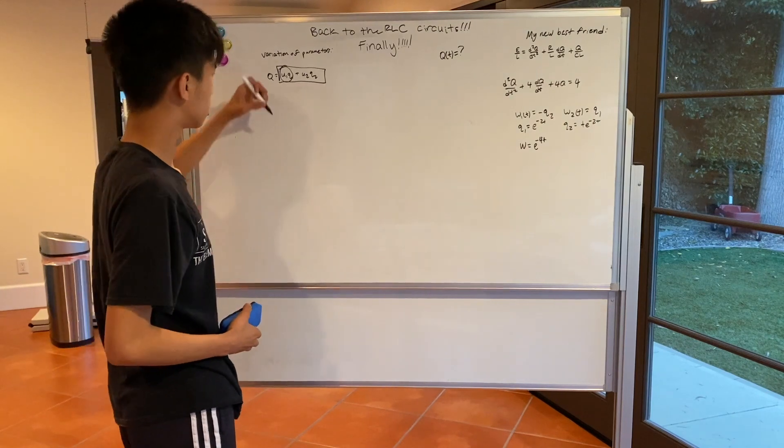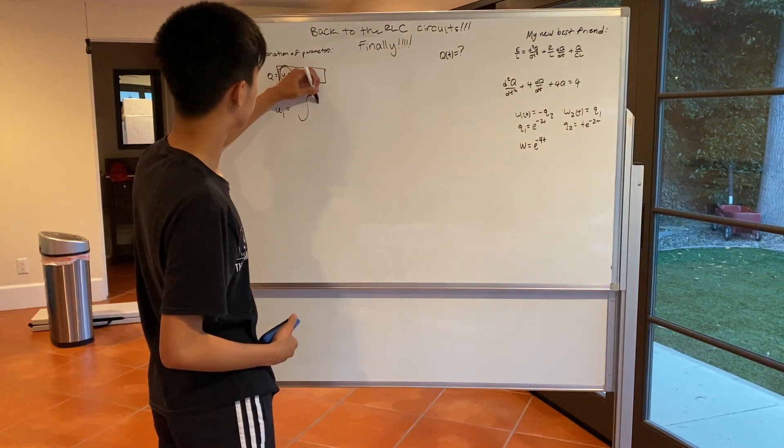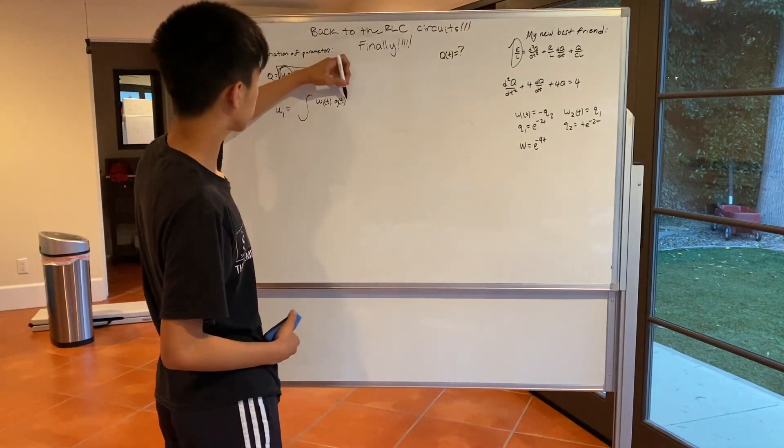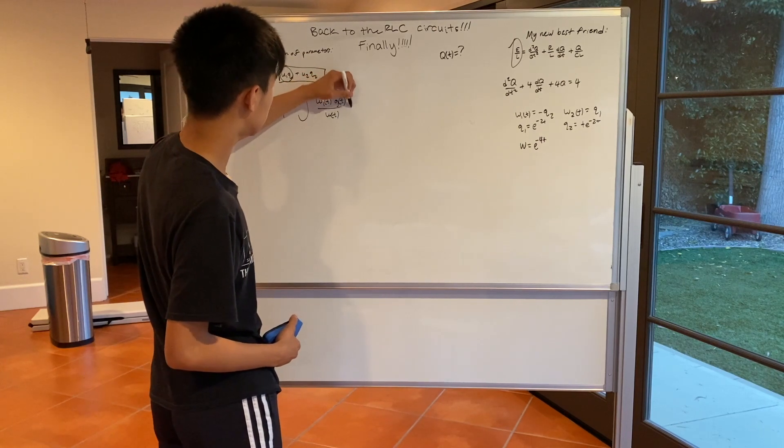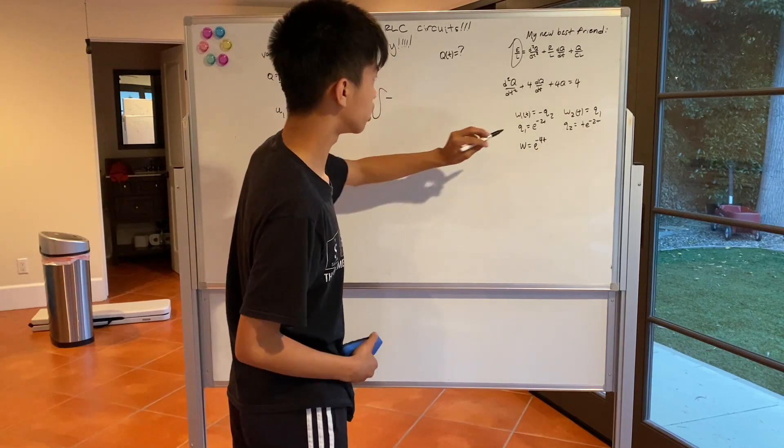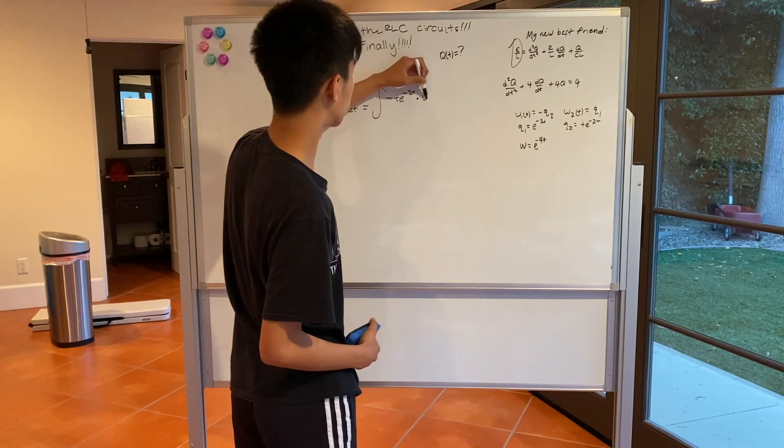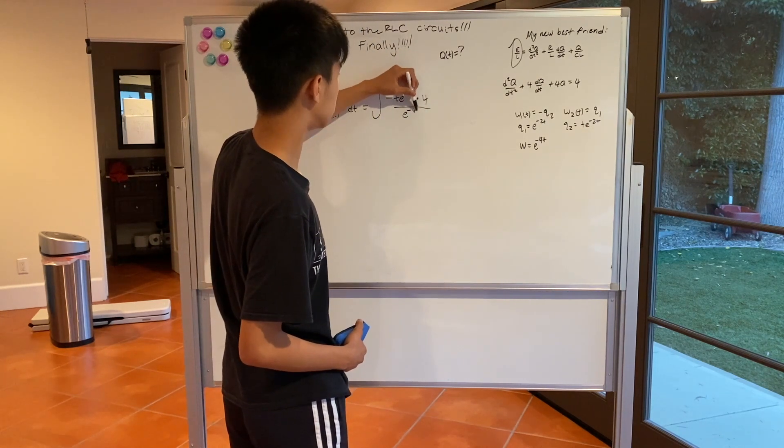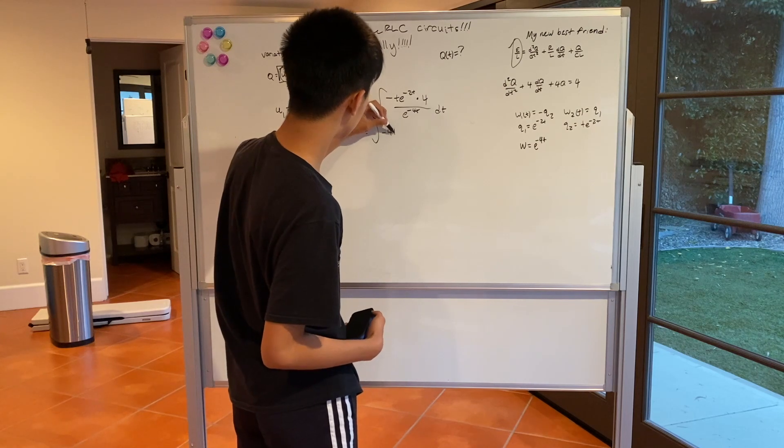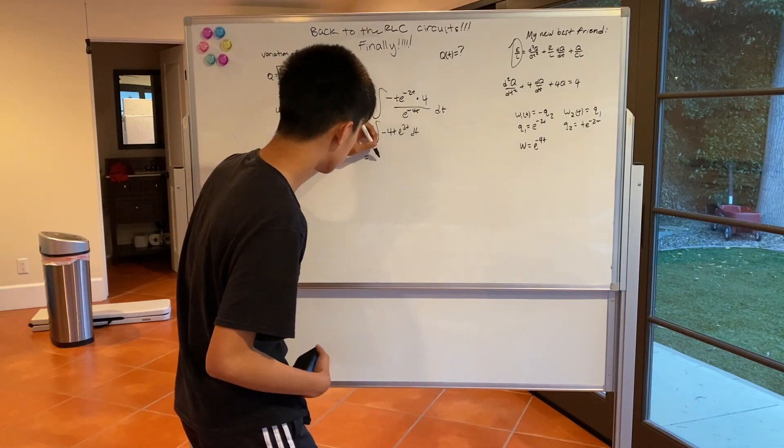So after all is said and done we'll find that U1, we can just plug everything back into our original equation. So U1 is equal to first Wronskian times G of T over overall Wronskian dt. Then we just get W1 of T, so that's negative Q2. We already know what Q2 is here: negative T e to negative 2t times G T which is just 4, over W of T which is e to the negative 4t dt. So we just get the integral of negative 4T e to the 2t dt, which we'll be able to get with integration by parts.